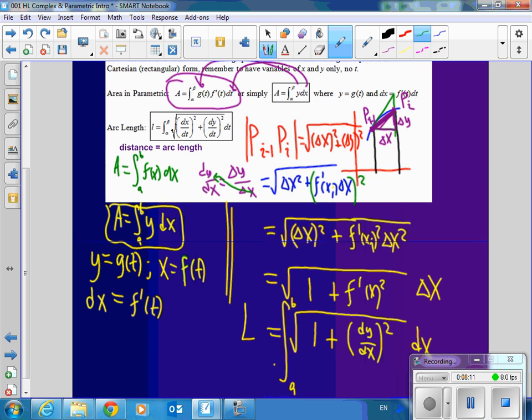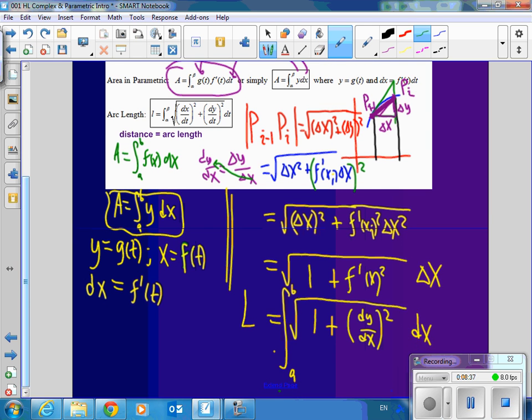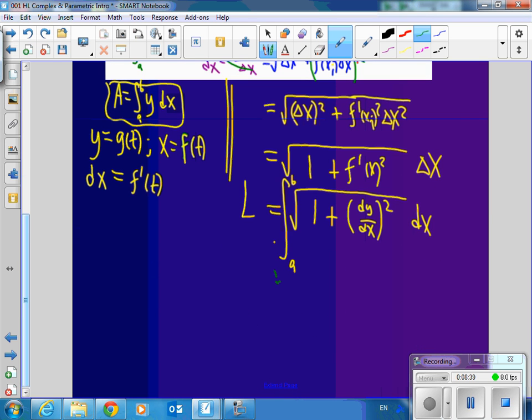So what they did very cleverly is they moved this delta x to this other side. So now delta y is dy dx, or f prime of x, times delta x. And remember that was squared. So when we square that, we'll have delta x squared plus f prime of x squared delta x squared. Factor out a delta x. Square root of delta x squared is delta x. And you're left with 1 plus the derivative, or dy dx squared. That is crazy. That is the arc length of a curve. And all you need to know is dy dx, square it plus 1, square root, integrate it from a to b dx.